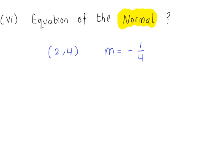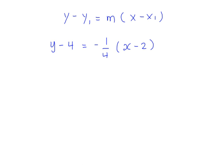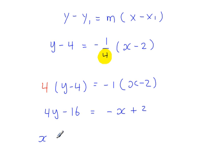Using y minus y1 equals m(x minus x1), we write: y minus 4 equals minus 1/4 times (x minus 2). To clear the fraction, multiply both sides by 4, giving 4(y minus 4) equals minus 1(x minus 2). Expanding: 4y minus 16 equals minus x plus 2. Bringing all terms to the left-hand side: x plus 4y minus 18 equals 0. This is the equation of the normal.